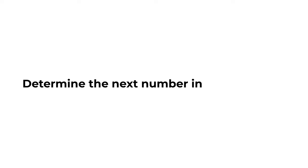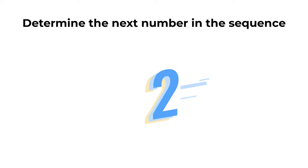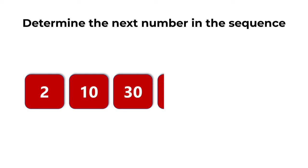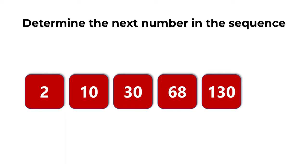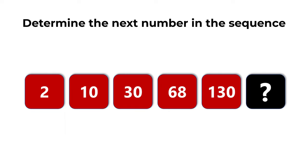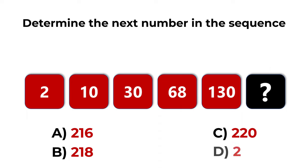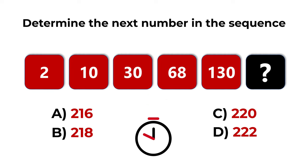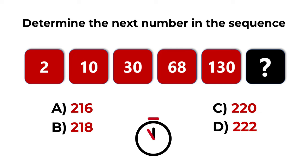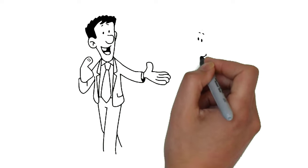You're presented with a sequence of numbers: 2, 10, 30, 68, 130, and the next number is missing. Choices: A: 216, B: 218, C: 220, D: 222. Pause the video and give yourself 20 to 30 seconds — that's about as much time as you get on the real test.